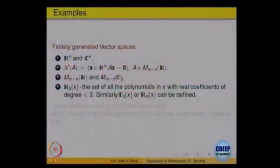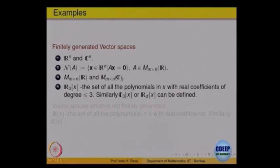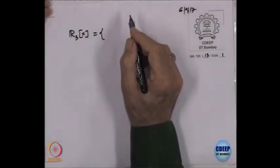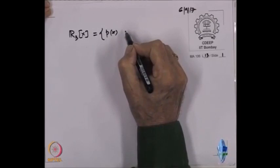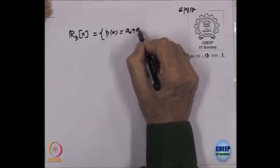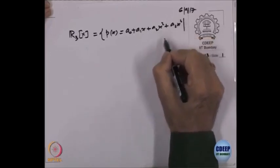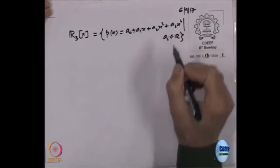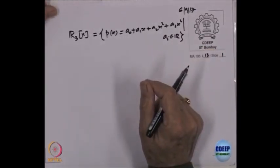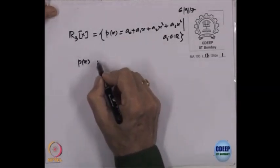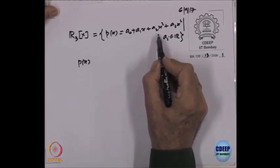Let us look at R₃[x], polynomials of degree less than or equal to 3 — is it finitely generated? So we are looking at R₃[x]. Elements of it are polynomials P(x), which look like a₀ + a₁x + a₂x² + a₃x³, where the aᵢ's are real entries. So that is what polynomials look like. Clearly P(x) is already a linear combination of what?